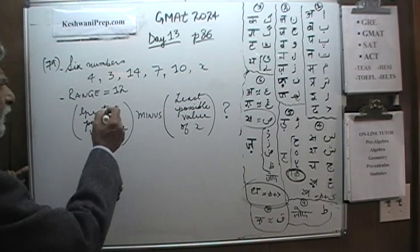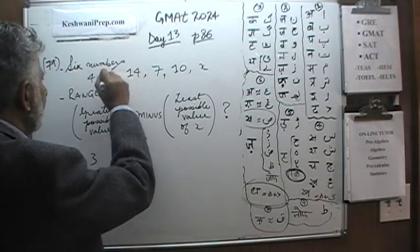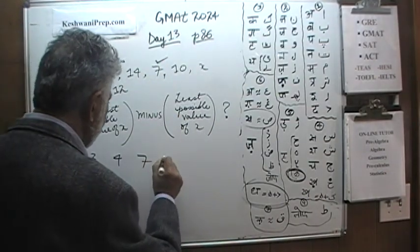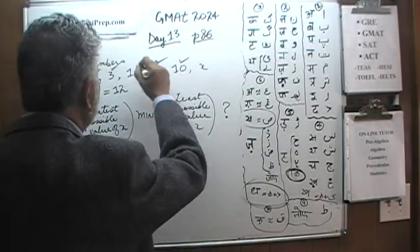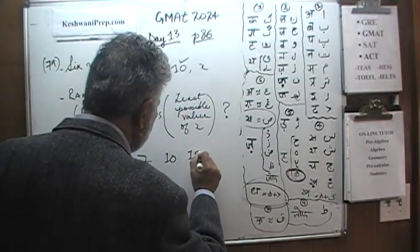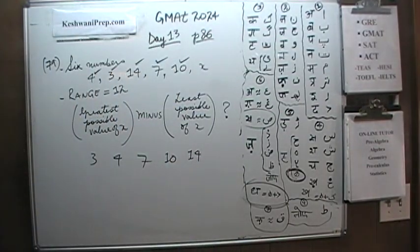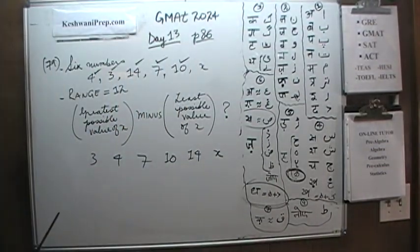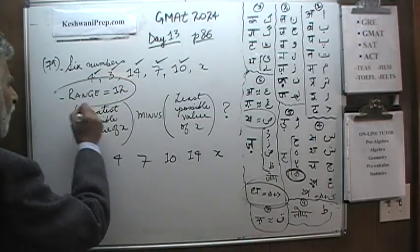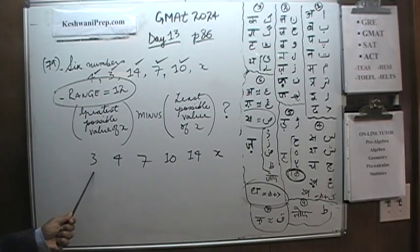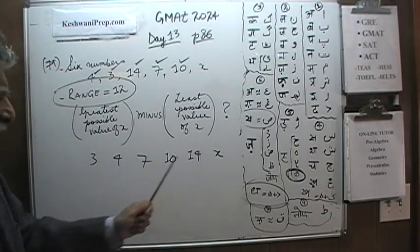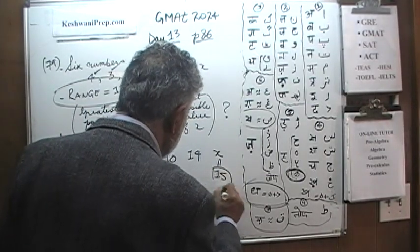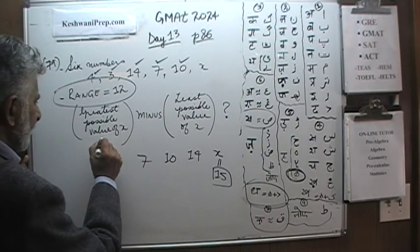First, to figure out the range, we put them in order: 3, 4, 7, 10, 14. There are two possibilities. If X goes on the high end, given that the range is 12 and the minimum is 3, then X would have to be 15. So that's the greatest possible value of X, which is 15.